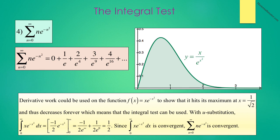With u-substitution, the integral from 0 to infinity of x e to the negative x squared dx equals negative 1 over 2e to the infinity plus 1 over 2e to the 0, which is 1 half. Since the integral from 0 to infinity of x e to the negative x squared dx is convergent, the series summation from n equals 0 to infinity of n e to the negative n squared is convergent as well. Remember, this does not necessarily mean the series converges to 1 half — the 1 half merely indicates that this is a convergent series.